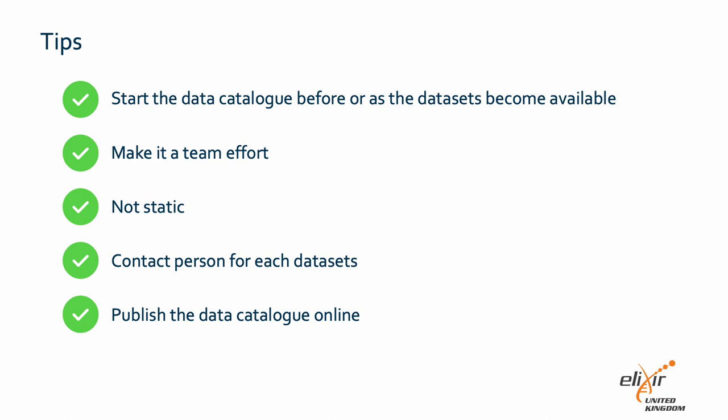One project's data catalog may differ from another. For example, one large consortium had many partners and data sharing agreements were different for each partner, with the complication that some partners could see only partial elements of the datasets. By creating extra columns for each partner, I was able to show which partner had access to which dataset or partial dataset. Remember, there may be datasets included in the data catalog that may not be published or readily available due to sensitive data. In these cases, ensure there is a contact person listed.